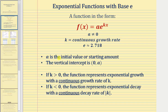a is also equal to the initial value or starting amount, which is the function value when x equals zero. Notice when x is zero, we'd have a times e raised to the power of zero, which equals a times one, which equals a. This means the vertical intercept is the ordered pair zero comma a. If k is positive, the function represents exponential growth with a continuous growth rate of k. If k is negative, the function represents exponential decay with a continuous decay rate of the absolute value of k.